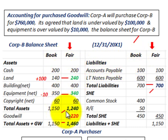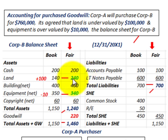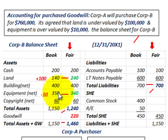We determine fair value in order to calculate any goodwill. Going through our basic example, the book and fair value for cash was the same: $200,000. Land was undervalued by $100,000, so the book was $140,000 and its fair value would be $240,000. Building was the same between book and fair value: $400,000. Equipment was overvalued by $10,000, so the book was $350,000 and we record it at a fair value of $340,000.